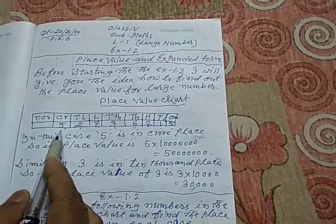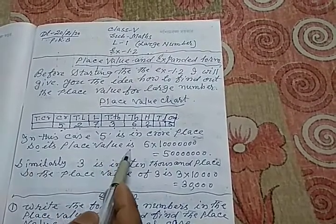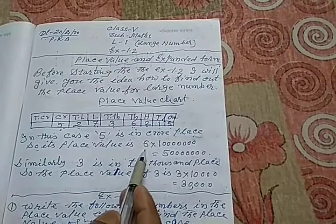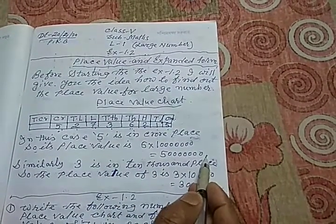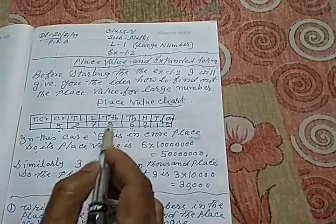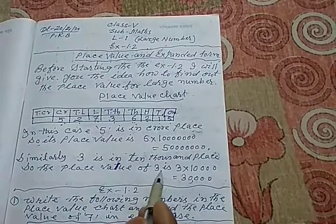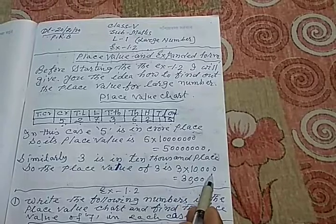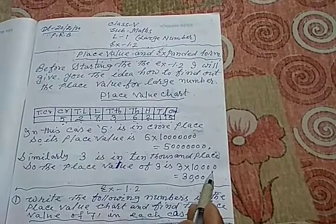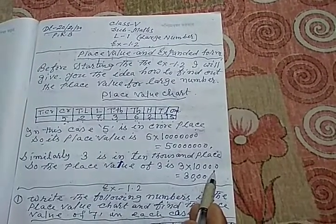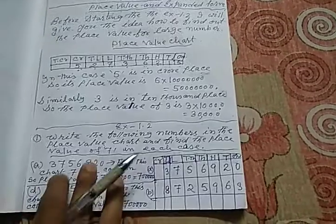In this case, this 5 is in crore place. So its place value will be 5 multiplied by 1 crore, that is 5 crore. Similarly, 3 is in 10,000 place. So the place value of 3 will be 3 multiplied by 10,000, because 3 is in 10,000 place. That is why 10,000 is multiplied and that is 30,000.